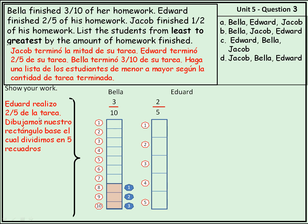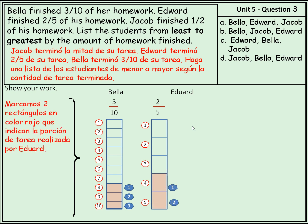Edward realizó dos quintos de la tarea. Dibujamos nuestro rectángulo base, el cual dividimos en cinco recuadros. Aquí está el rectángulo base, que es una tarea. Lo vamos a dividir en cinco cuadritos: uno, dos, tres, cuatro, cinco. Marcamos dos rectángulos en color rojo que indican la porción de tarea realizada por Edward — aquí marcamos uno y dos.